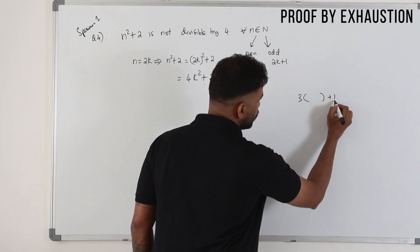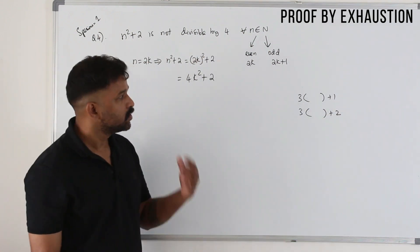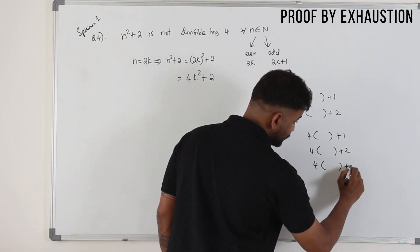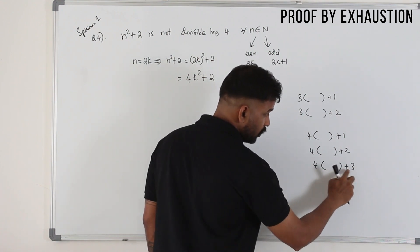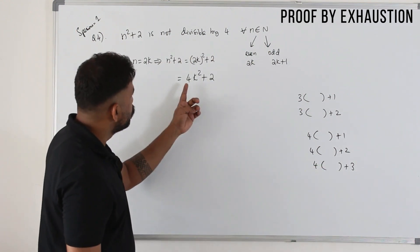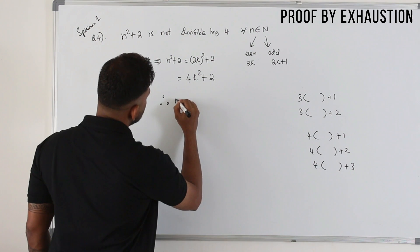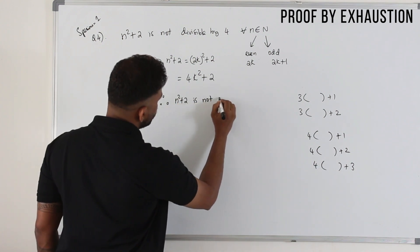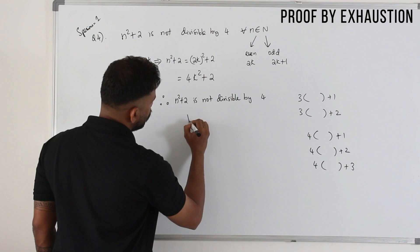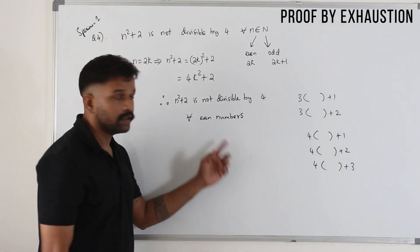To prove something is not a multiple of 3, you can write it in a form with remainder 1 or 2 — then it's not a multiple of 3. Similarly for 4: if you can write the expression as 4k + 1, 4k + 2, or 4k + 3, it's not divisible by 4. Take the even case n = 2k: substituting gives n² + 2 = 4k² + 2, which is 4(k²) + 2 — so 4 times something plus 2. Therefore n² + 2 is not divisible by 4 for all even numbers.